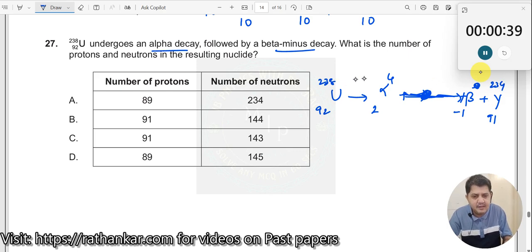So what I have done is I have balanced the mass numbers and the proton numbers. So this should be 91 y 234. 91 is the proton number.